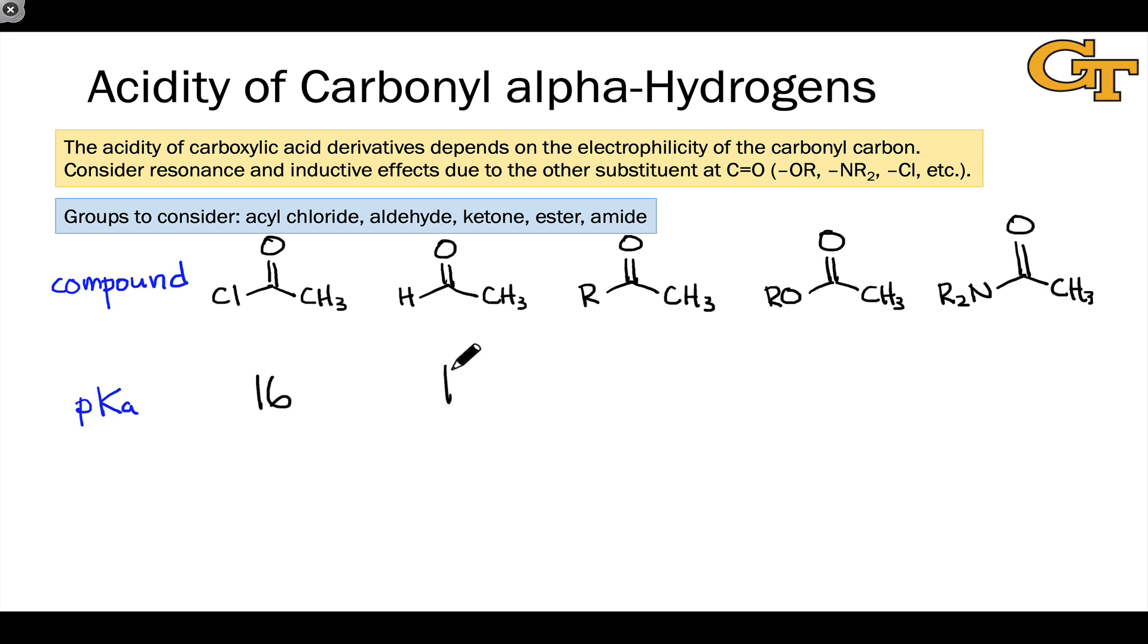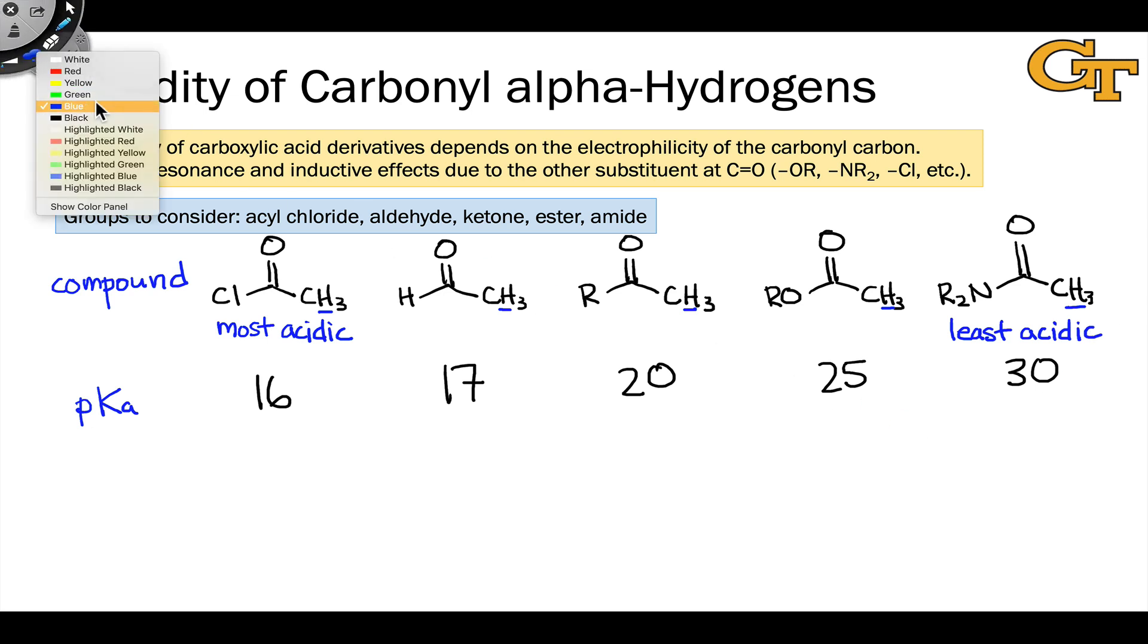What we find in this series is that acidity decreases going from left to right. The acyl chloride is the most acidic, and the amide is the least acidic. The reasons for this are not immediately clear, but it's evident that it has something to do with this substituent that's attached to the carbonyl carbon.